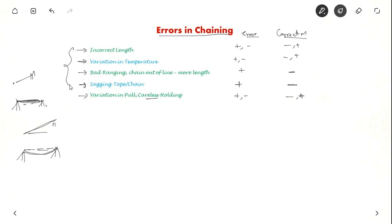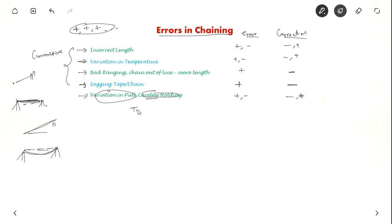These four — incorrect length, temperature variation, bad ranging, and sagging — are called cumulative errors. If the error occurs with a positive sign, it will always be of positive sign and keeps adding up. But variation in pull or careless holding might be very tight sometimes and very loose other times — it happens by accident, so errors can be compensated. Sometimes it will be positive, sometimes negative, so it gets compensated every time. It is called a compensating error.